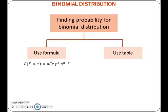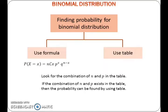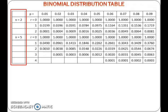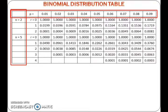The probability of a binomial distribution can be found by using a formula or by using a table. To find the probability, first look for the combination of N and P in the table. If the combination of N and P exists in the table, then the probability can be found using the table. The value of N is given in the first column of the table, while the value of P is given in the first row.